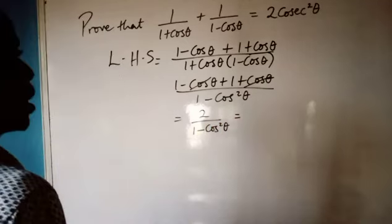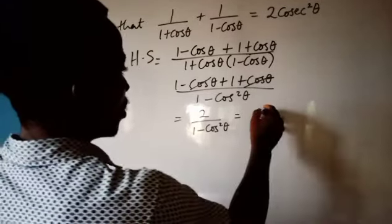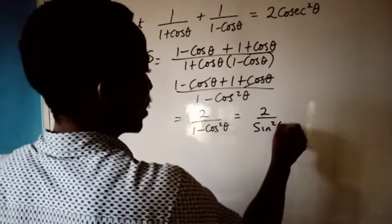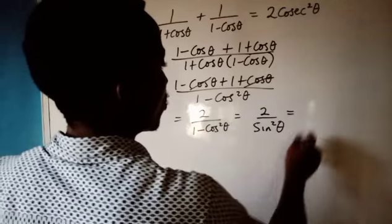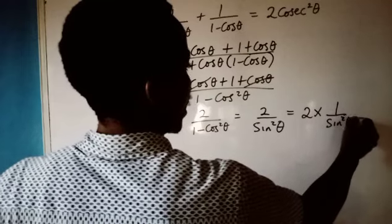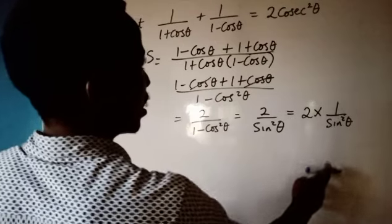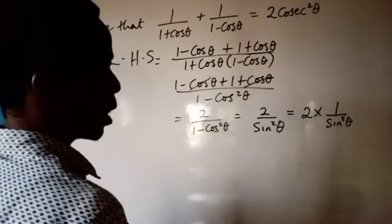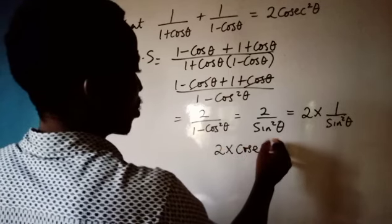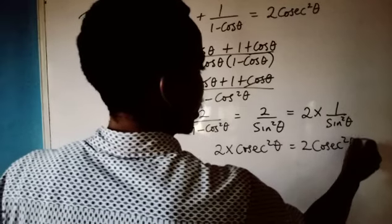We know that 1 minus cos squared theta equals sin squared theta. So this becomes 2 over sin squared theta. We can split this as 2 times 1 over sin squared theta. Now 1 over sin squared theta is cos squared theta, so this becomes 2 times cos squared theta.